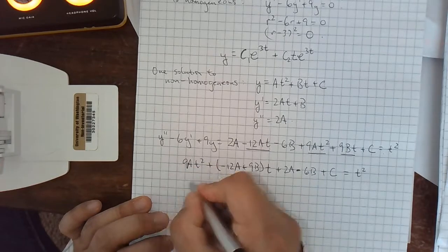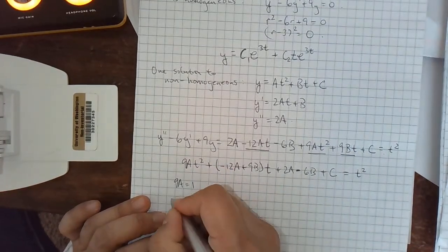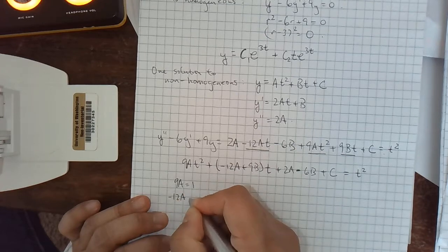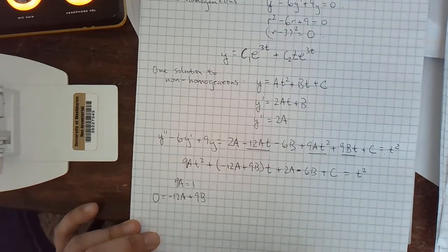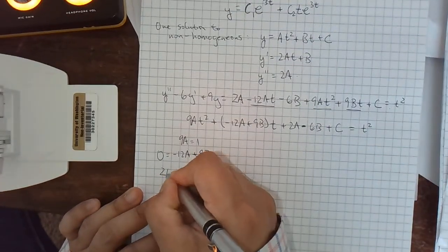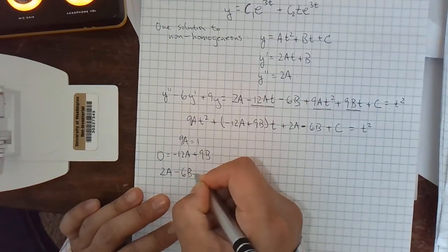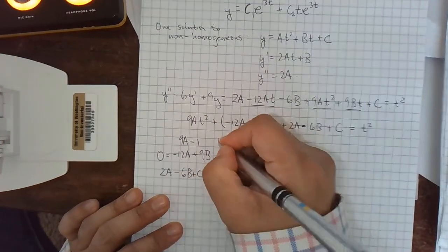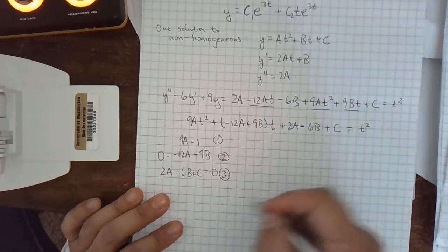So the t squared coefficient has to be 1. The t coefficient has to be 0. I'm going to write the 0 on the left. If I leave a negative sign out in front, I might leave it out on a subsequent line. And then the constant coefficient also has to be 0. 2a minus 6b plus c equals 0. Okay, those are my three equations. This one's easy. The first one I can just solve for a.